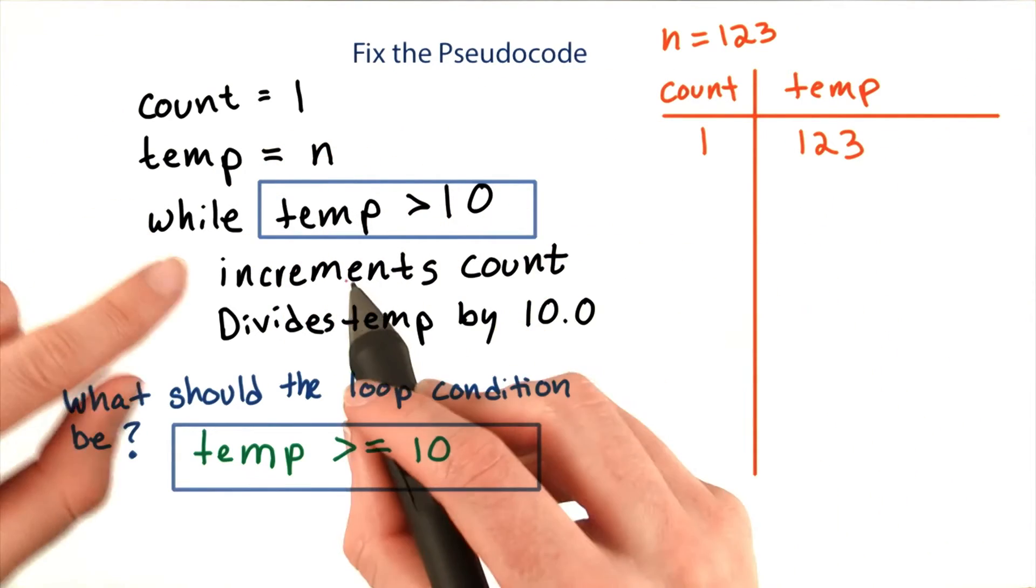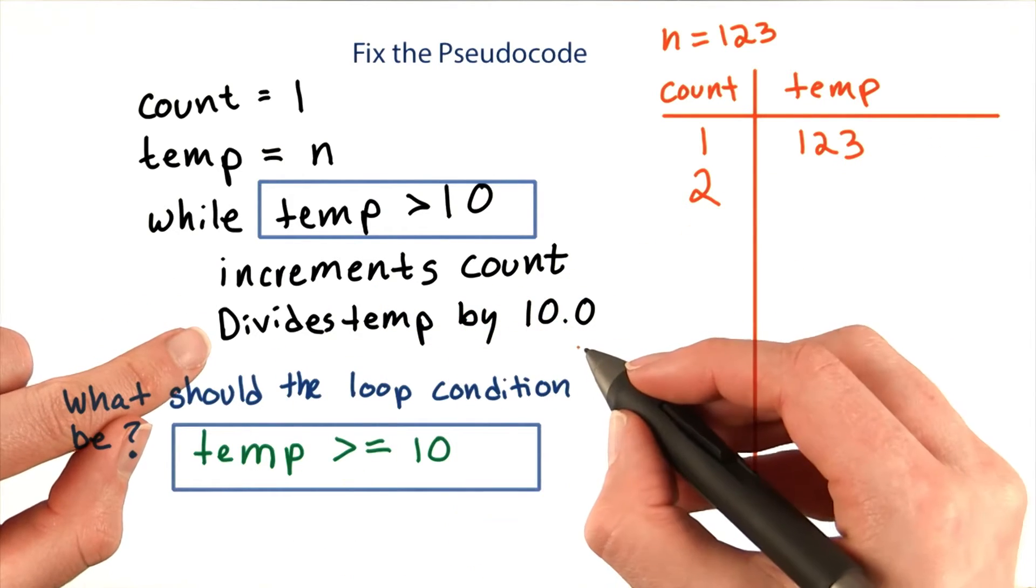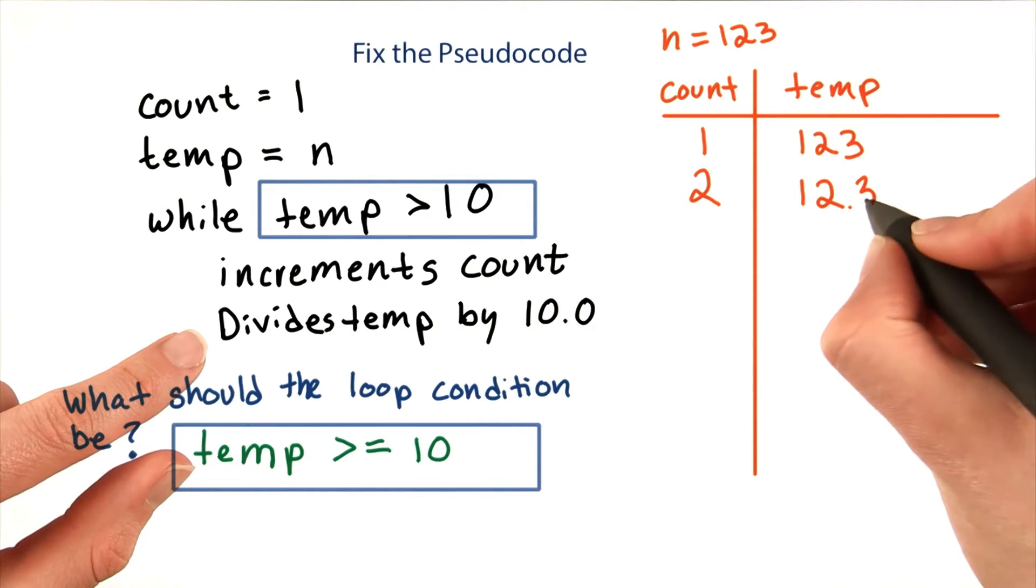Temp is greater than 10, so we increment count and divide temp by 10. Divide temp by 10.0, which will give us 12.3.